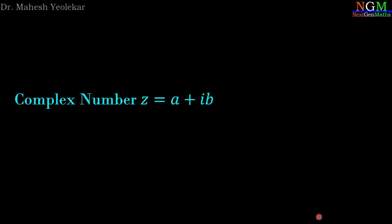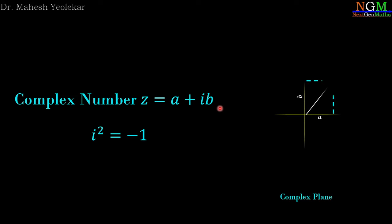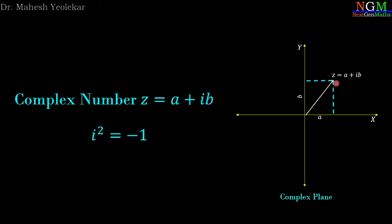Any complex number z can be expressed as a + ib, with the property i² = -1, where a is called the real part of the complex number and b is called the imaginary part. We plot that number on a complex plane where the horizontal x-axis is called the real axis and the vertical y-axis is called the imaginary axis. The number is shown as a radius vector where real part a lies on the x-axis and imaginary part b lies on the y-axis.